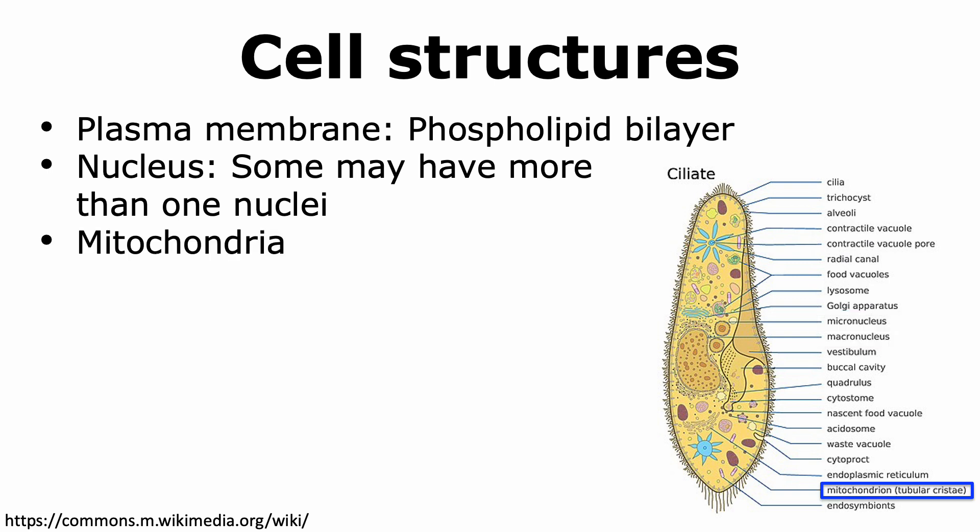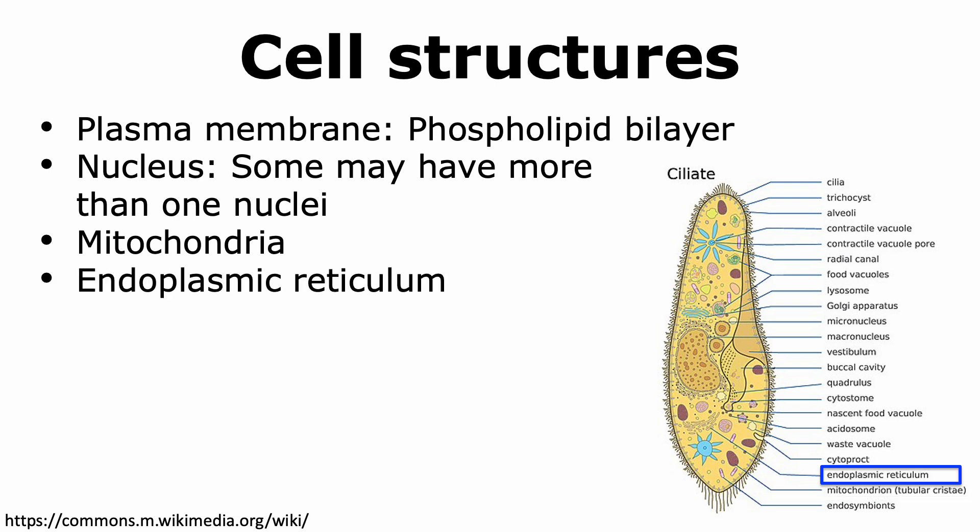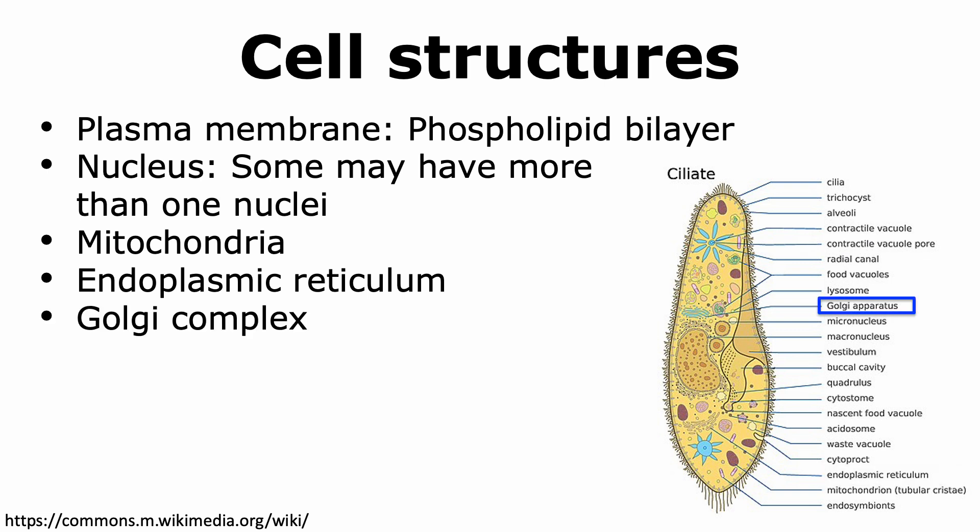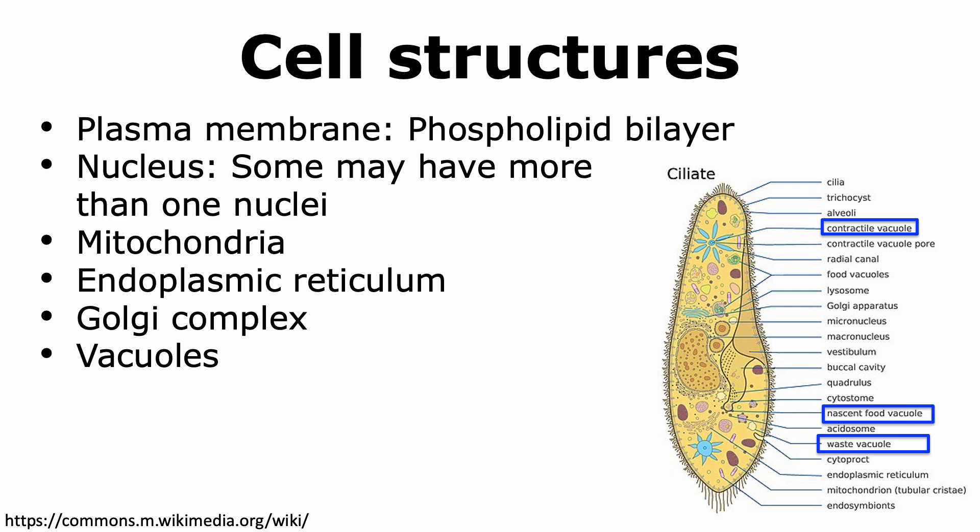Most protists have mitochondria, which is a membrane-bound organelle, and they also tend to have endoplasmic reticulum, including the rough as well as the smooth endoplasmic reticulum. All protists have the Golgi complex and vacuoles, which are large fluid-filled vesicles that can have specialized functions. For example, some can store and digest food, while others can store waste products.